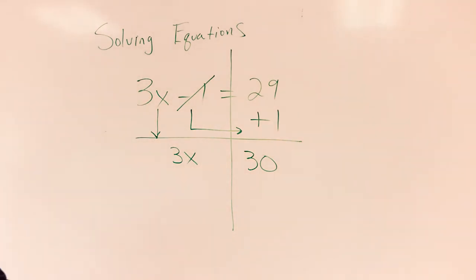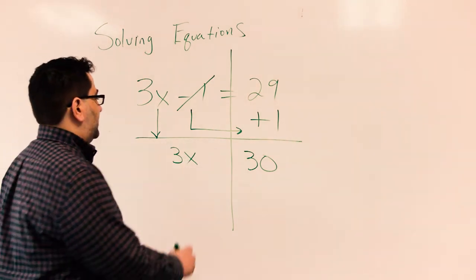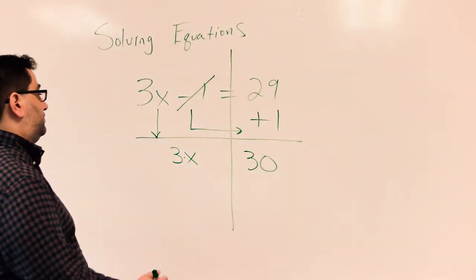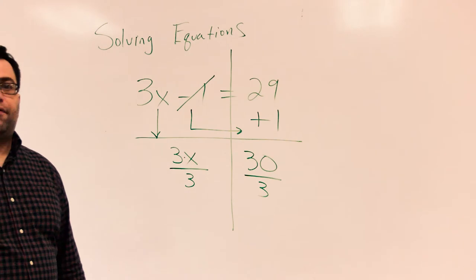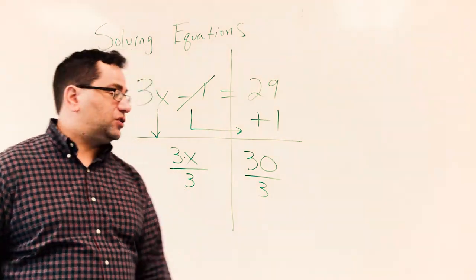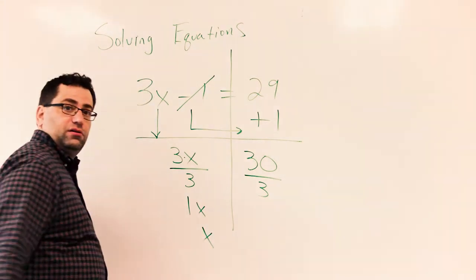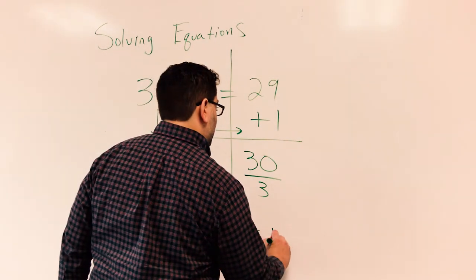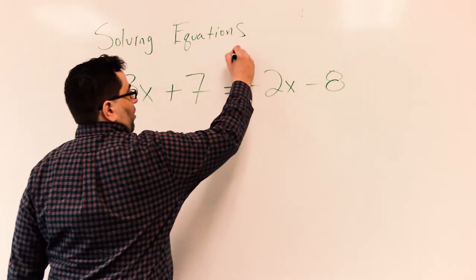The last step here is we have to get x to be by itself. So I need to reverse the process of 3 times x. In order to do that, we use division. When you use division, you have to use division on both sides of our equation wall. 3 divided by 3 is 1x, or just x. And 30 divided by 3 is 10. I identify my equal sign, and that is where my wall is going to go.